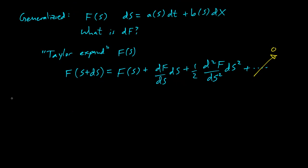If you subtract f of s off from both sides, f of s plus ds minus f of s is kind of like df. What does that leave us with? df/ds ds plus half second derivative, and now we have ds squared. We have a formula for ds up here.